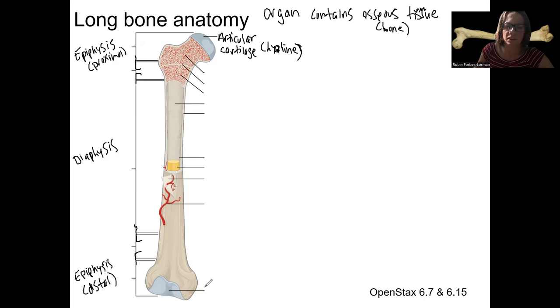So same thing down here. Let's put articular cartilage. This is going to be important for articulations, where this bone connects with another bone at the joint.